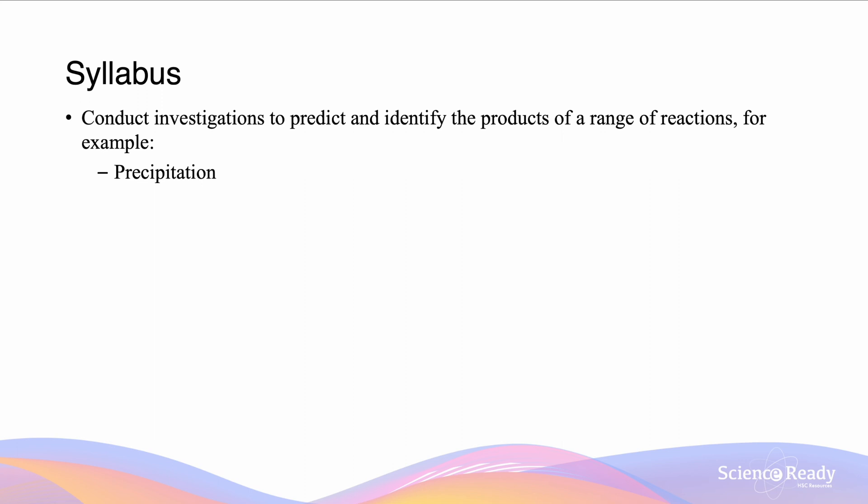Hi everyone. In this video we will be looking at what precipitations are and discussing the solubility rules which help us to predict what the products of a precipitation reaction are. We will also be going through neutral species, total ionic and net ionic equations as the different types of equations you will need to learn to express precipitation reactions.